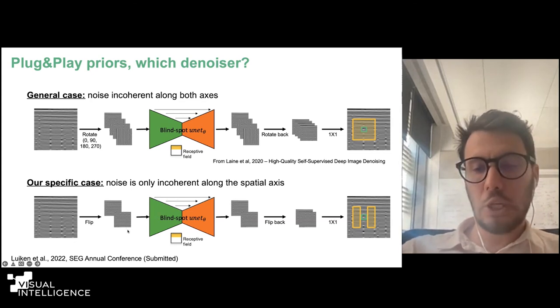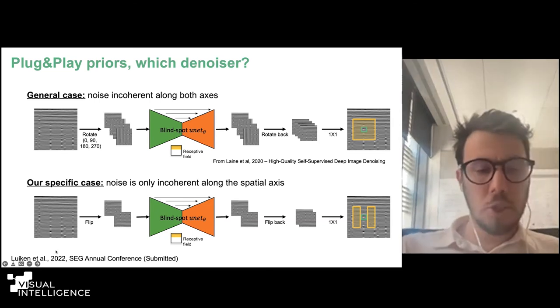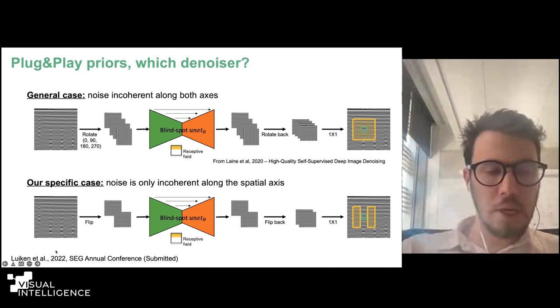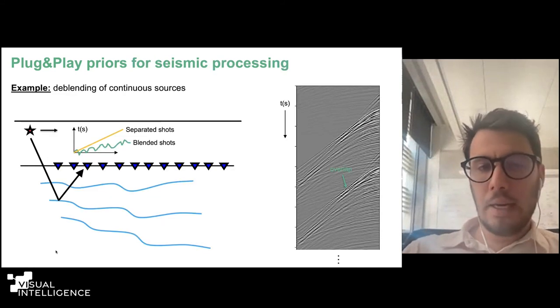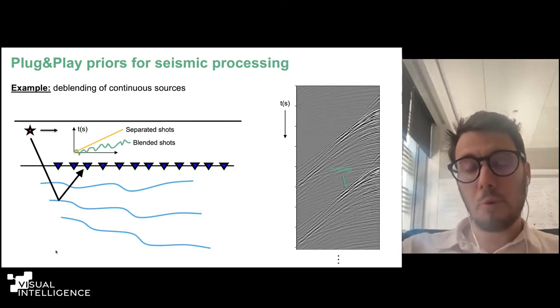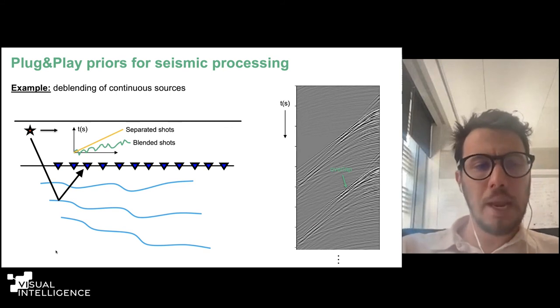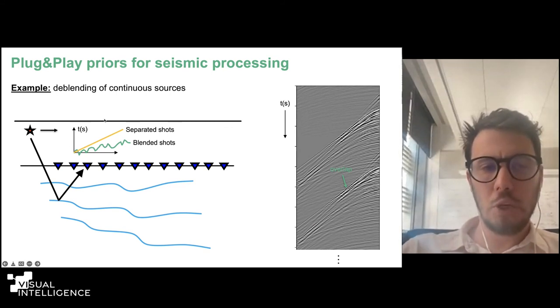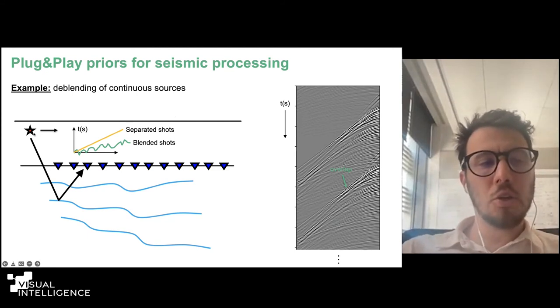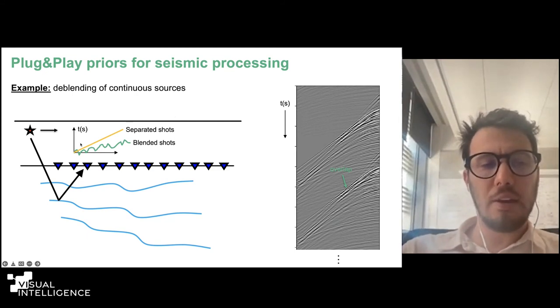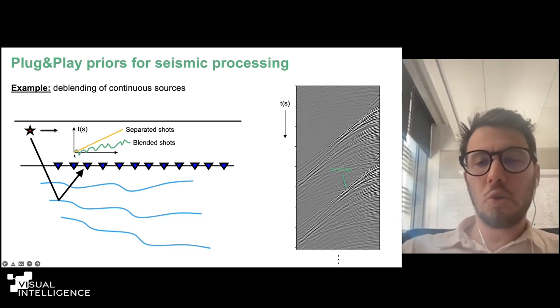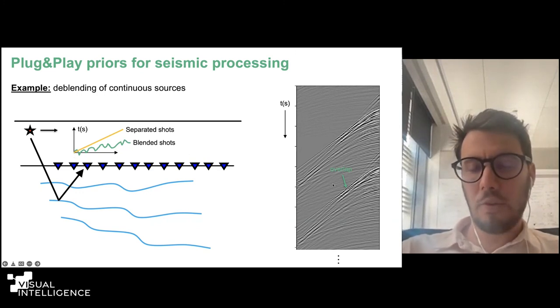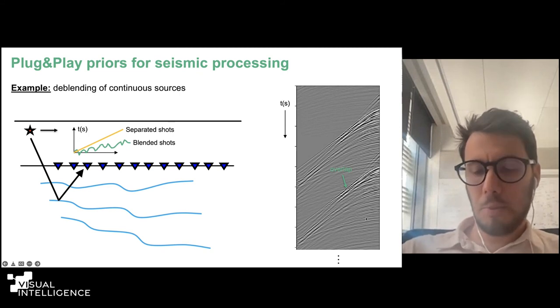So instead we started to look into a family of deep learning algorithms called self-supervised learning or more specifically blind spot learning for denoising. What these algorithms do, they create a network that is specifically crafted not to use the middle pixel to predict the middle pixel. So they're doing very similar to what you will do in standard statistical denoising. You learn from the neighbors what should be the value of the middle pixel and if the signal is more coherent than the noise, this will be successful. The algorithm was initially proposed by developers at Nvidia in 2020. It's very interesting the idea. They simply use a U-Net, but I would say it's a superpower U-Net because it's a U-Net that has a causal convolutional filter.